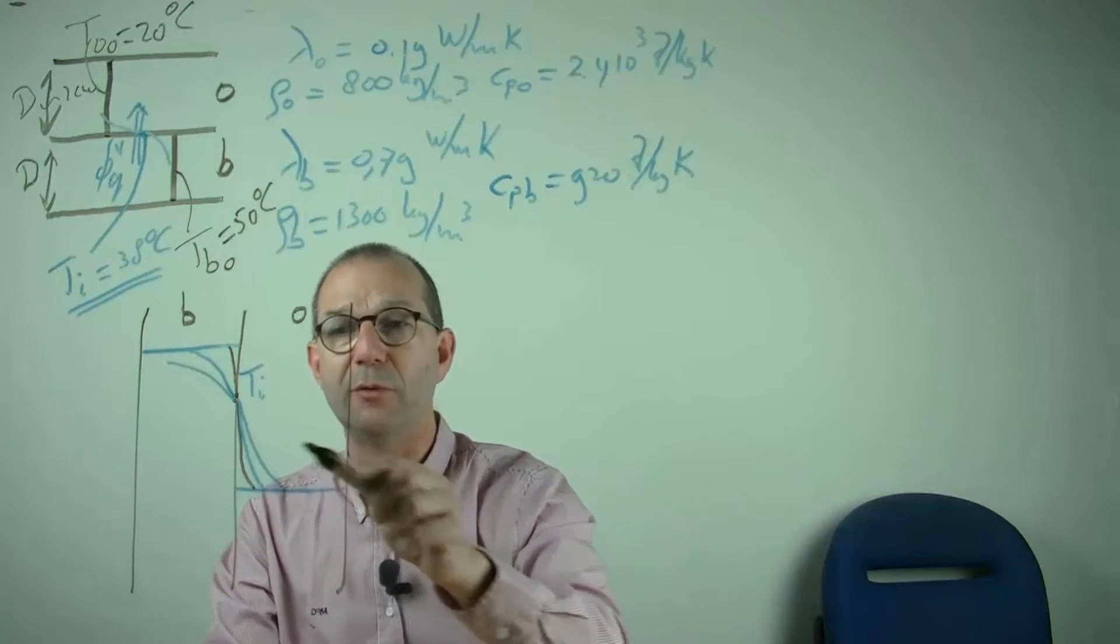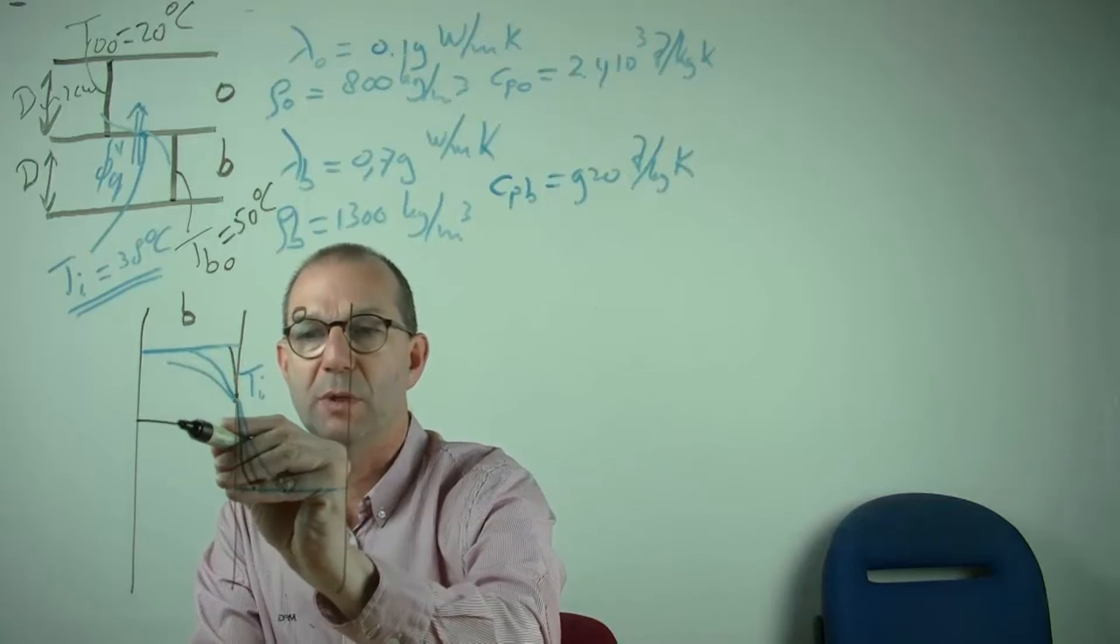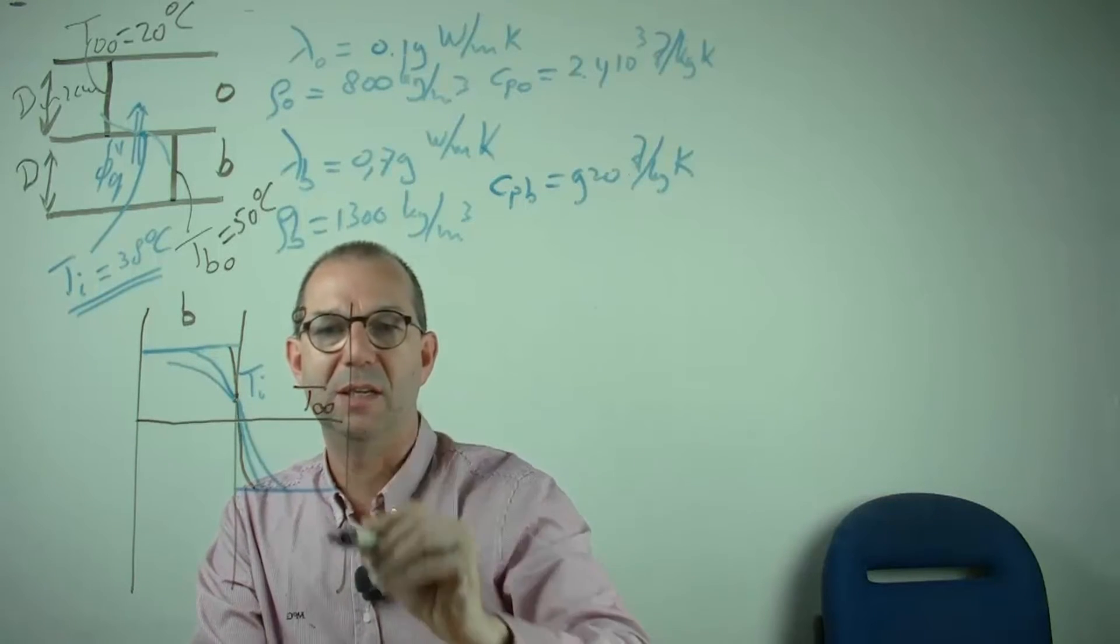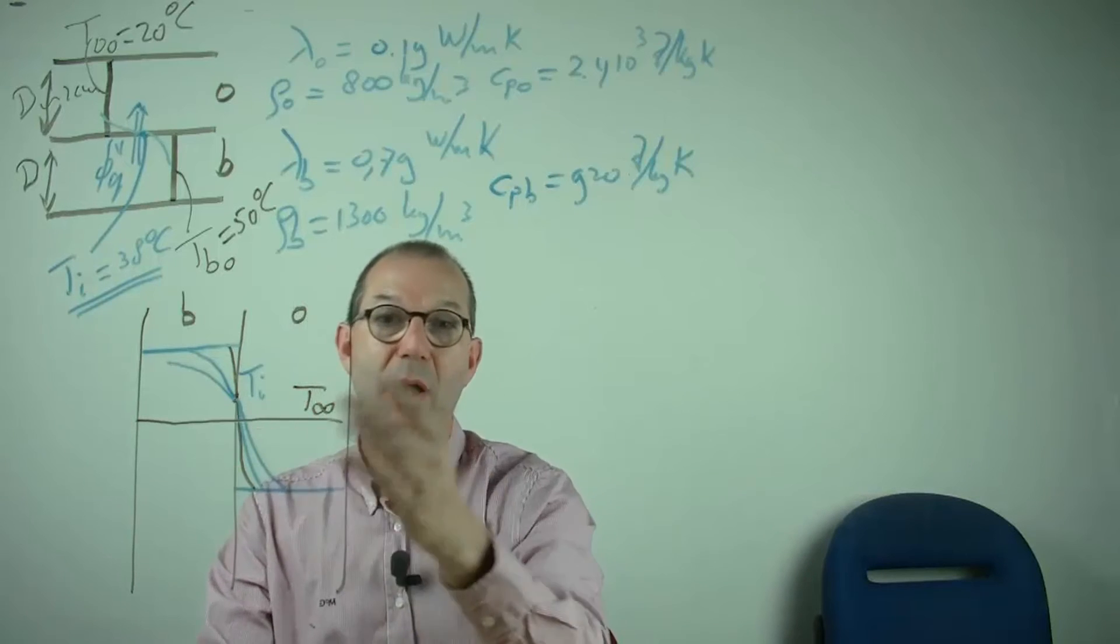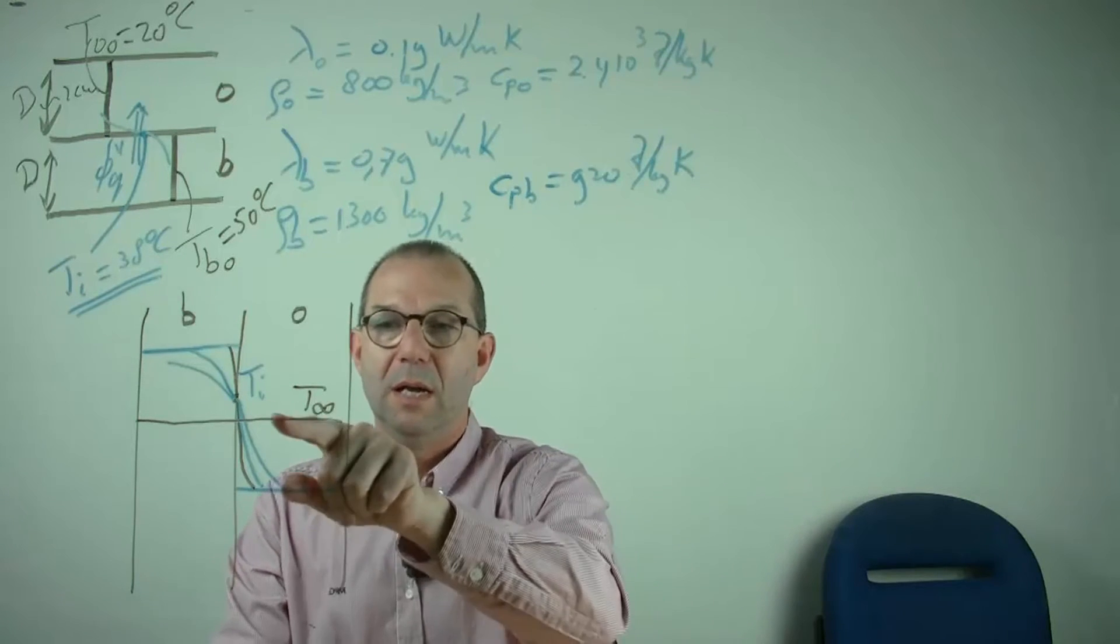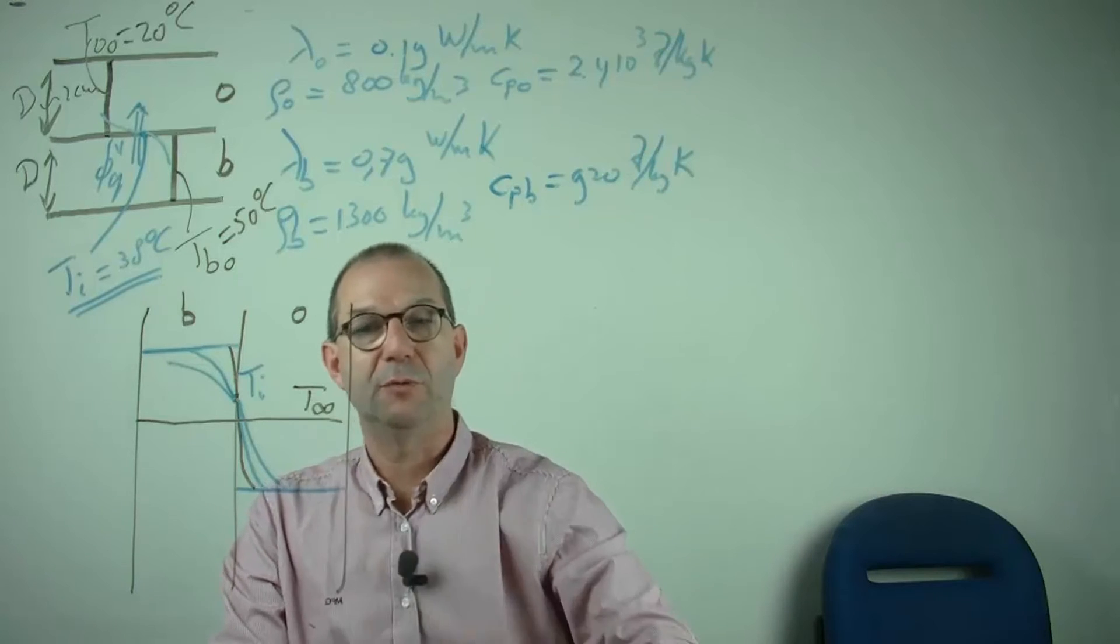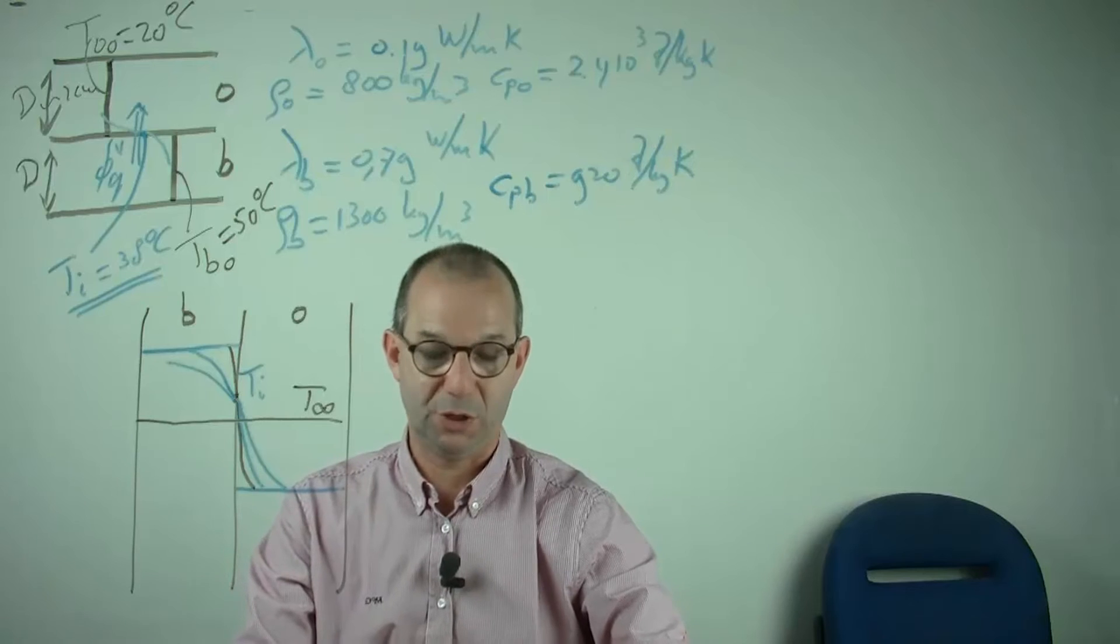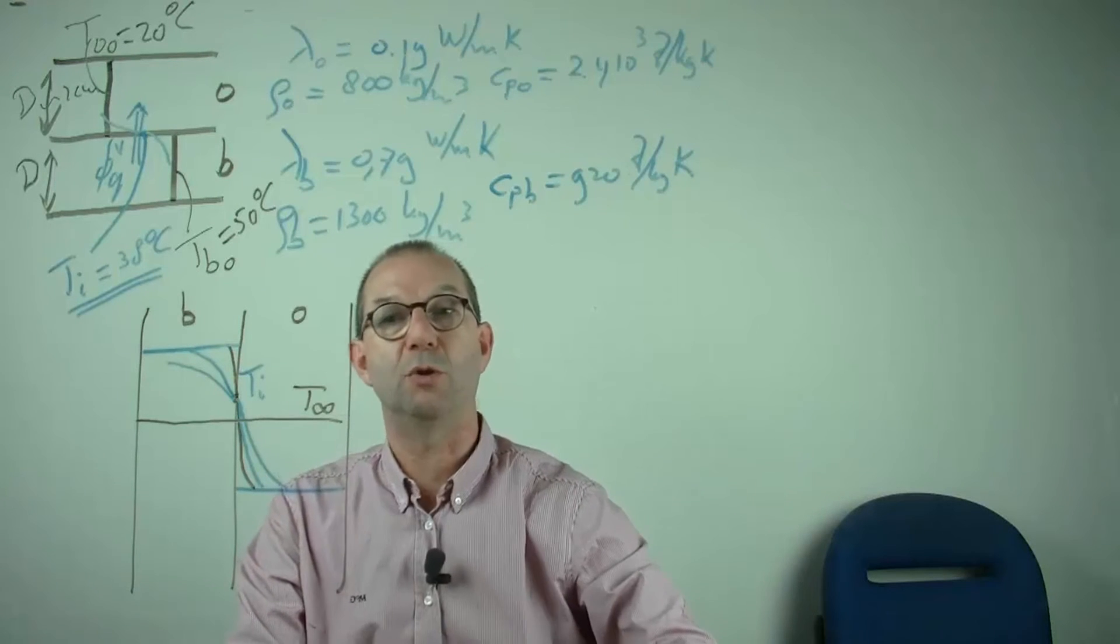If you wait long enough, the temperature of the two layers must be the same. Let me call this T infinite, as no driving force is allowed in equilibrium anymore. What is T infinite? And is it different from T interface that is initially found for short times? This is not so difficult to compute.